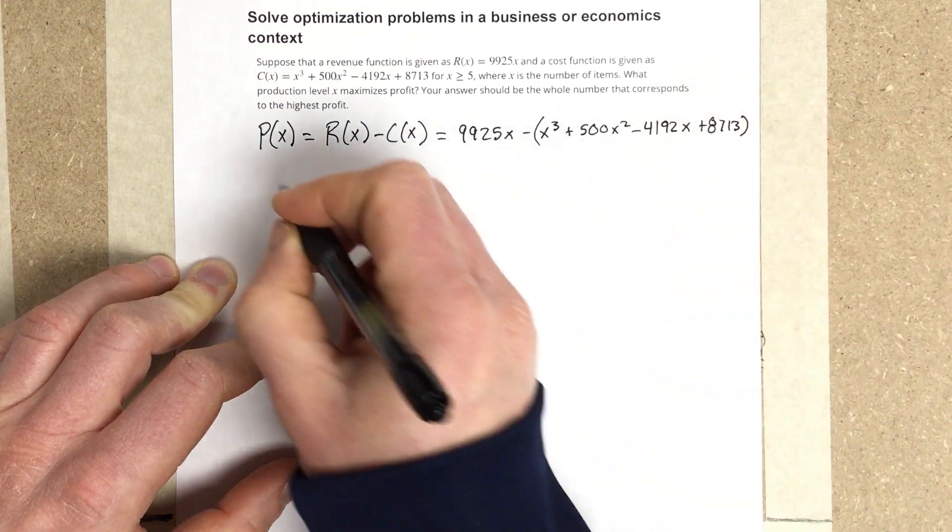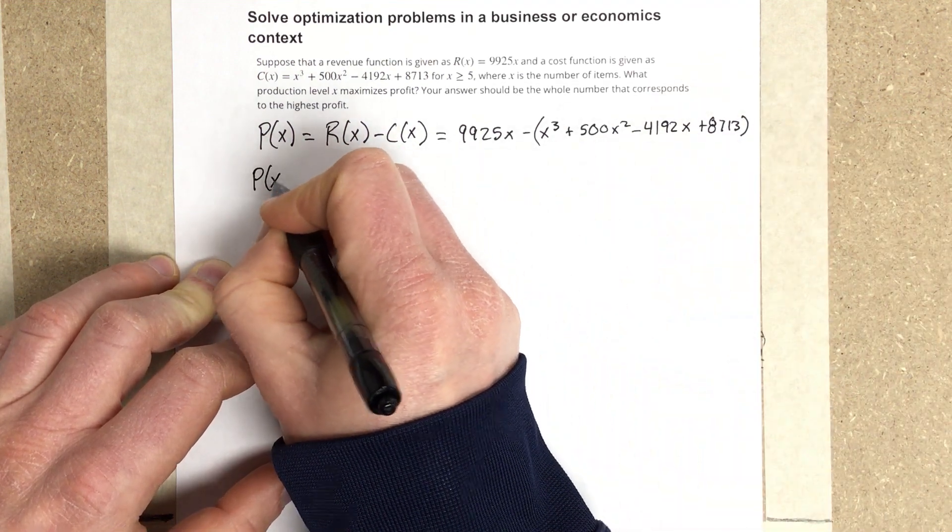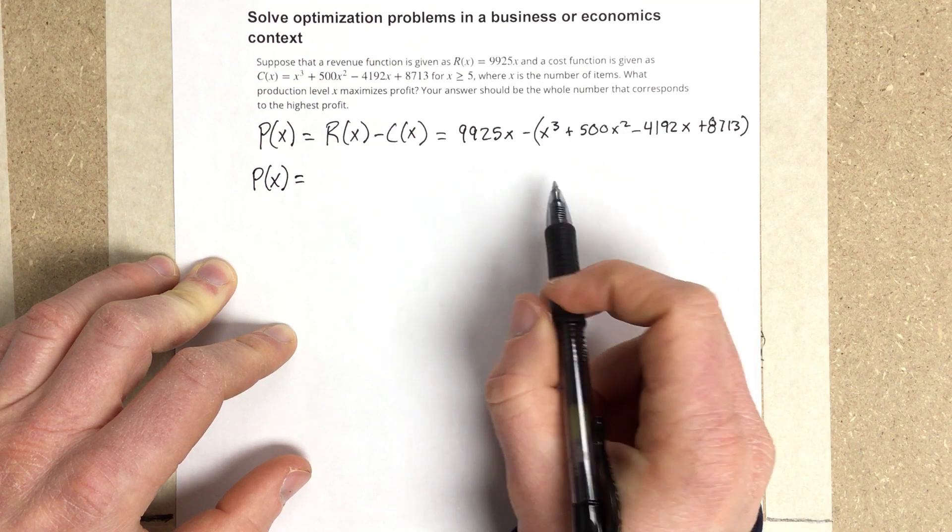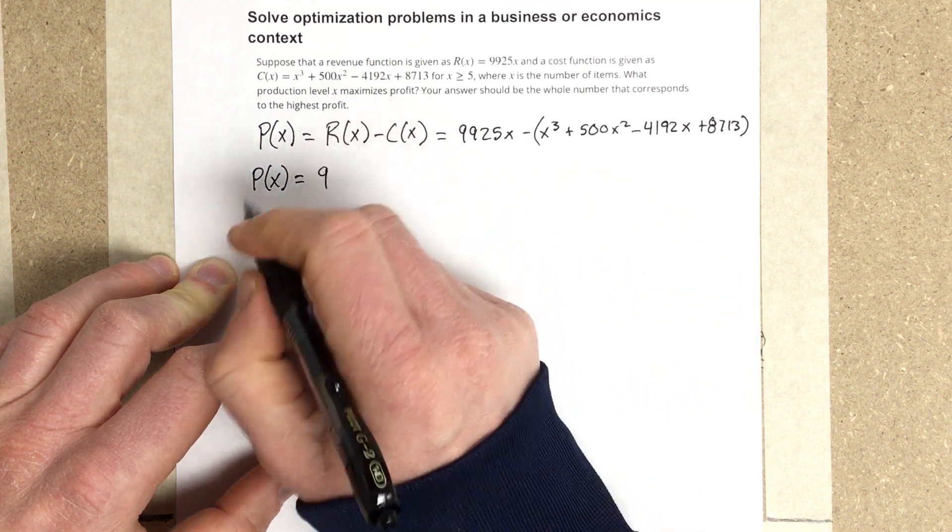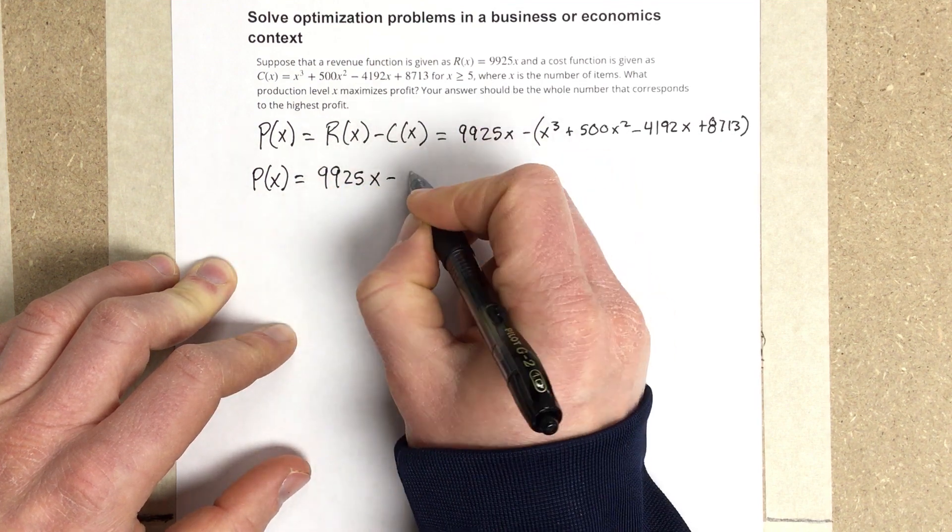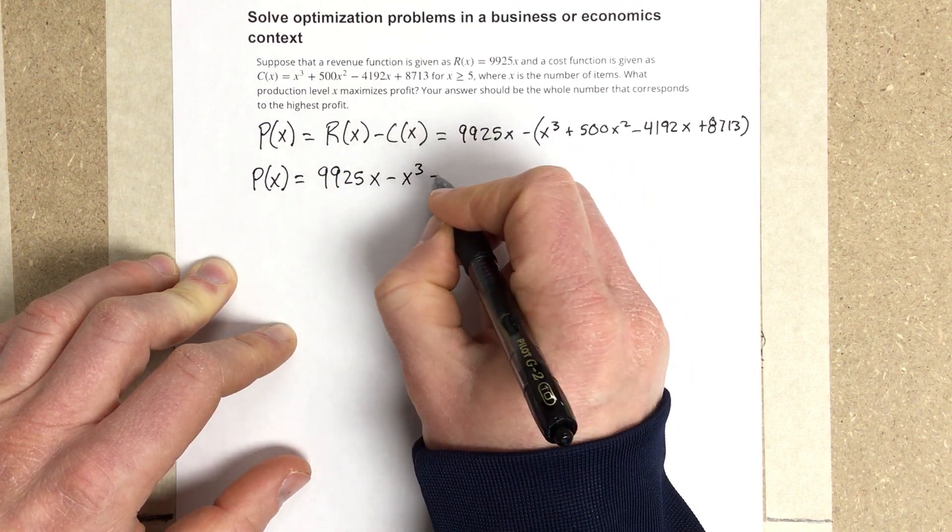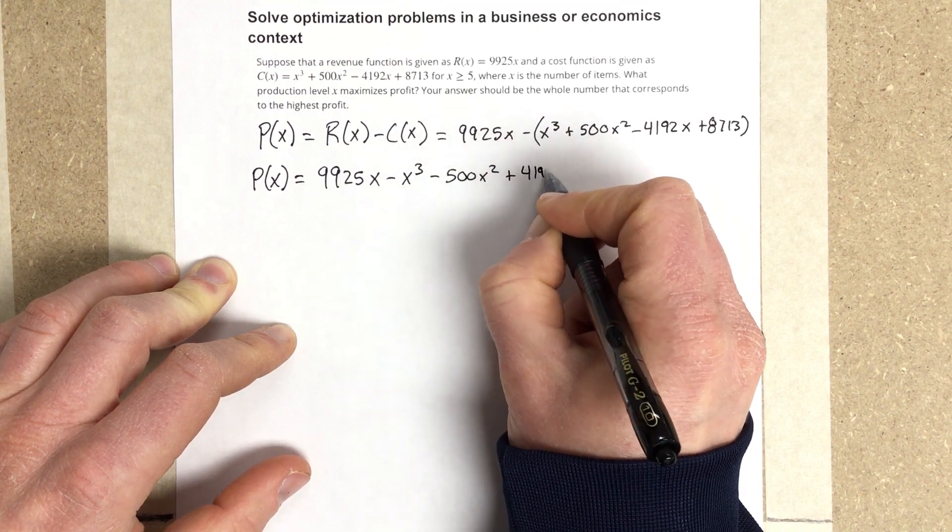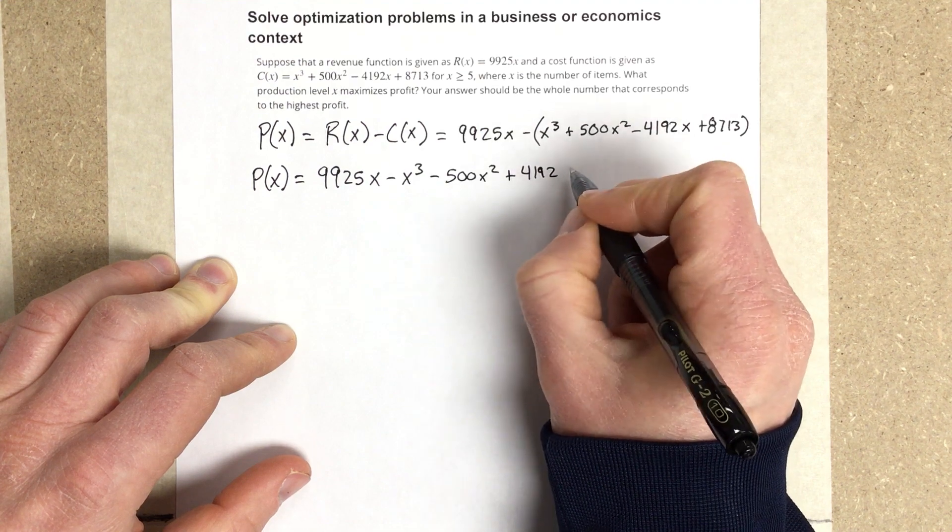When we distribute that, we get P(x) = 9,925x - x³ - 500x² + 4,192x - 8,713.